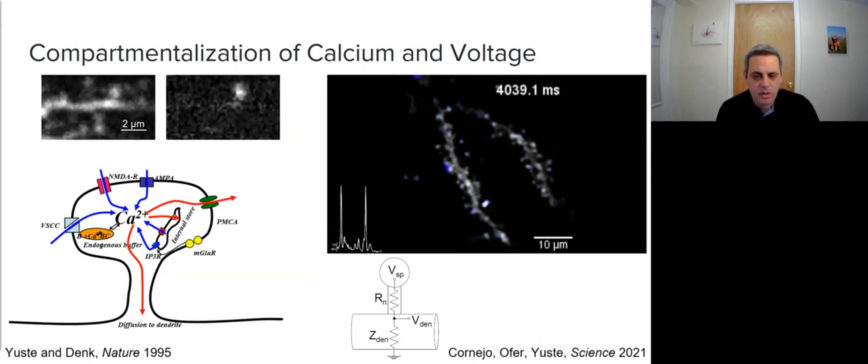In this movie, we can see two dendrites with spines and patch clamp voltage recording at the soma. There are three states: backpropagation of action potentials from the soma into the dendrite and spines, local dendritic spikes, and activity only on the spine heads.